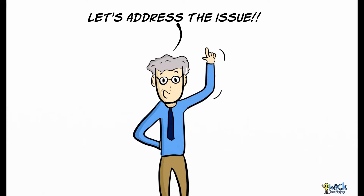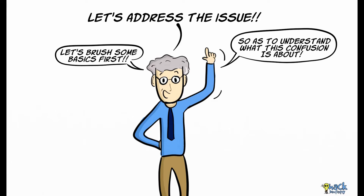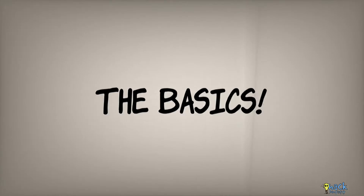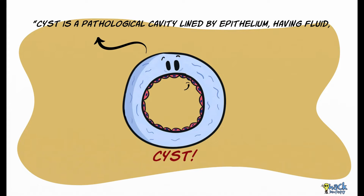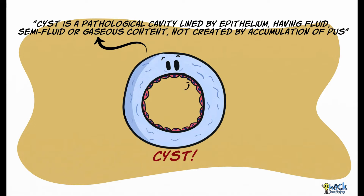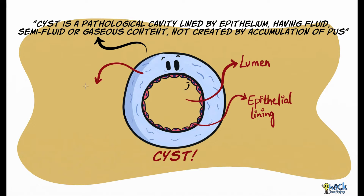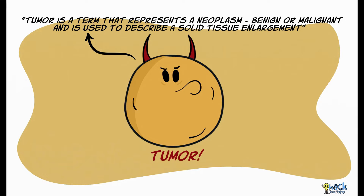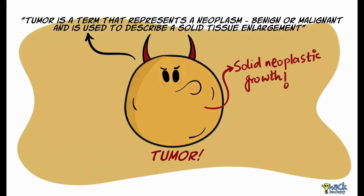Before we get into further details, let us brush through certain basics to better understand this confusion and where this lesion stands in the most recent WHO classification of odontogenic cysts and tumors. A cyst is defined as a pathological cavity lined by epithelium having fluid, semi-fluid, or gaseous content not created by the accumulation of pus — consisting of a lumen, an epithelial lining, and a connective tissue wall or capsule. A tumor represents a neoplasm, benign or malignant, describing any solid tissue enlargement without a lumen.